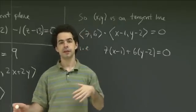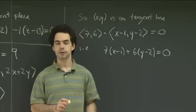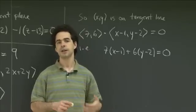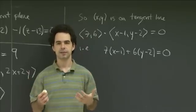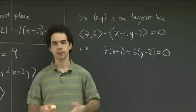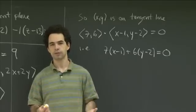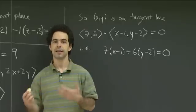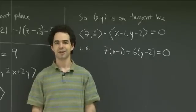So there you go. Using the gradient, we can compute tangent planes to surfaces. Similarly, we can use the same idea to compute tangent lines to curves. The point is that the gradient vector of a function is orthogonal to the level curves of that function. And so we use that to get the normal vectors to our curves or our surfaces. And with the normal vector, we can then easily compute the tangent plane or the tangent line. So I'll stop there.